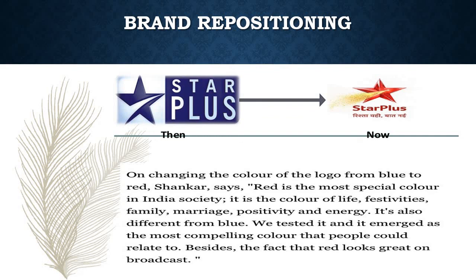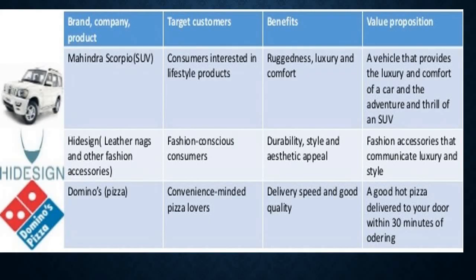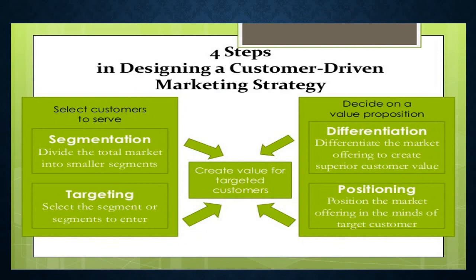In the case of Star Plus, it earlier had a purple color sign. Nowadays, Star Plus has come up with a red color sign — it is trying to reposition itself. Repositioning means when a company sees that the product or service is going into the maturity or decline stage, it tries to reposition the product in the minds of customers by making certain changes. Star Plus recognized that red is the most important color for Indian society — it is the color of life, festivals, family, marriage, and positivity. So they changed their logo to red, which looks great on their broadcast. Different companies use these strategies from time to time — these are very powerful tools that marketers use to have brand equity in the market along with product differentiation. Thanks a lot.